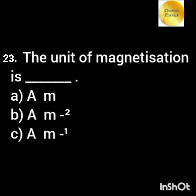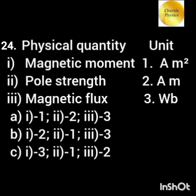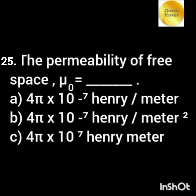The unit of magnetization or intensity of magnetization is dash. Match the unit with their corresponding physical quantity. The permeability of free space, mu not, is equal to dash.